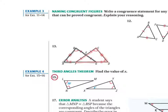Notice every angle and every side are corresponding, so even the last angle that doesn't have a mark here, we can show that these are congruent by the third angle's theorem. Every side has a mark and so does every angle, so the congruency statement for number 13 would be triangle B-A-G is congruent to triangle C-D-F.